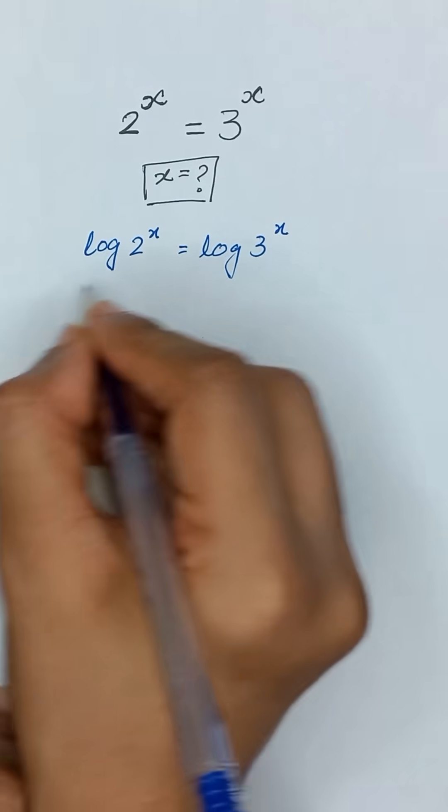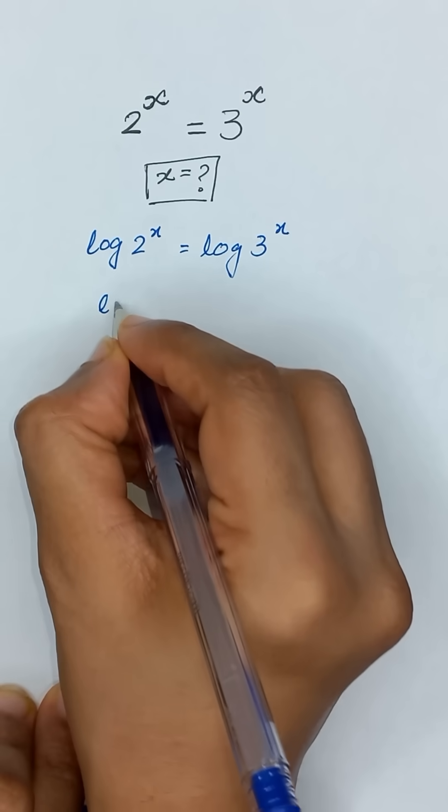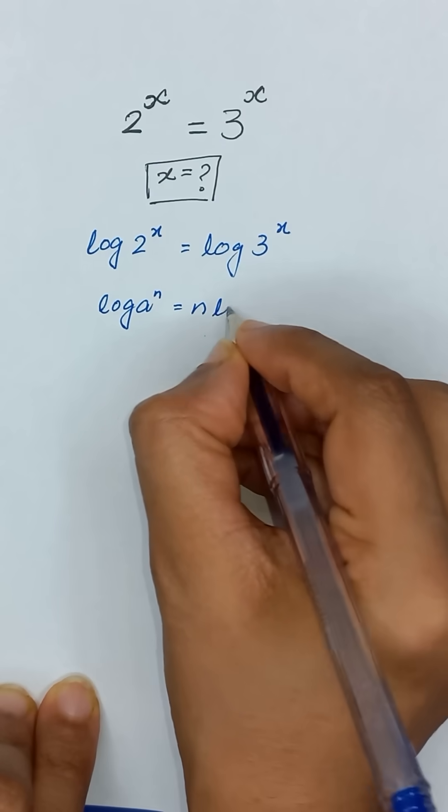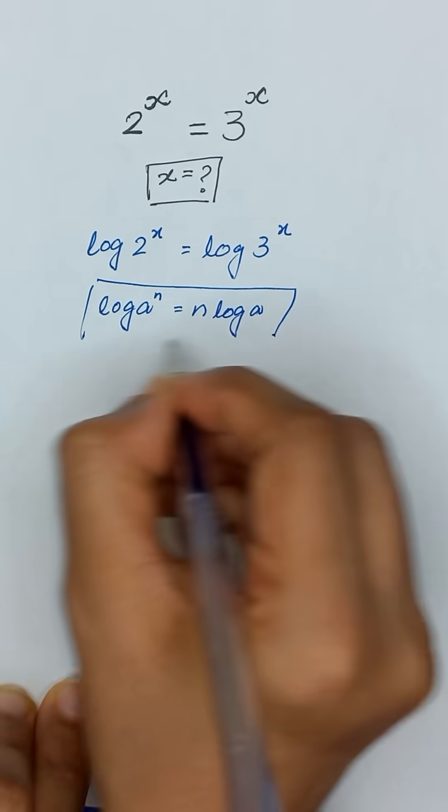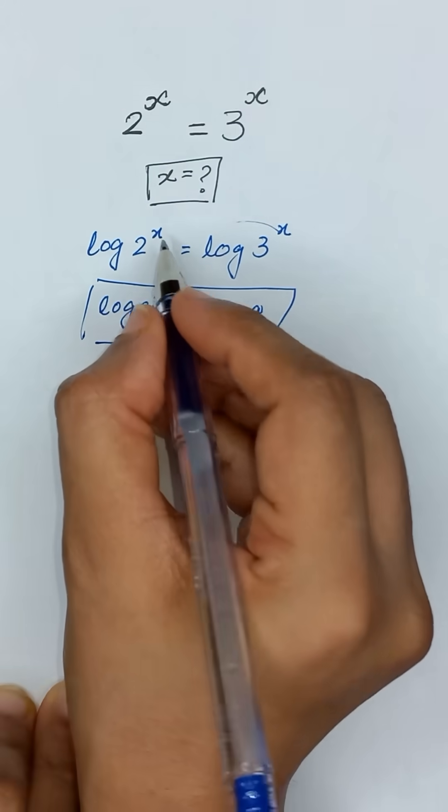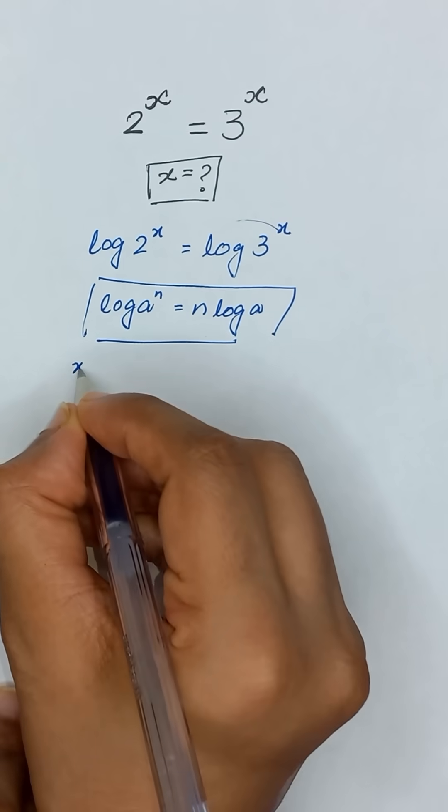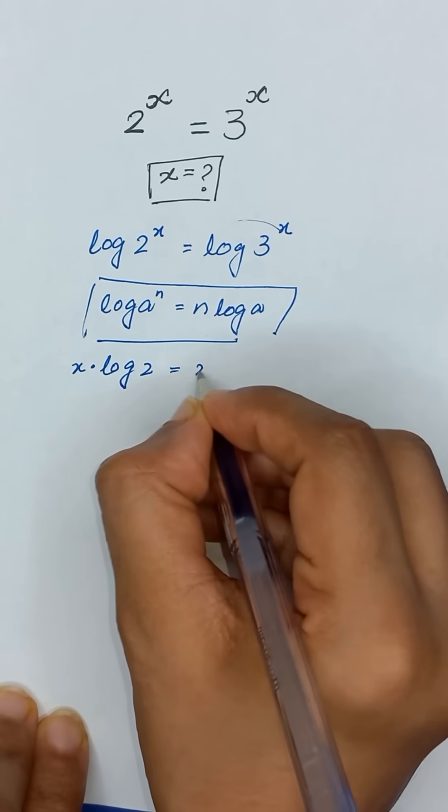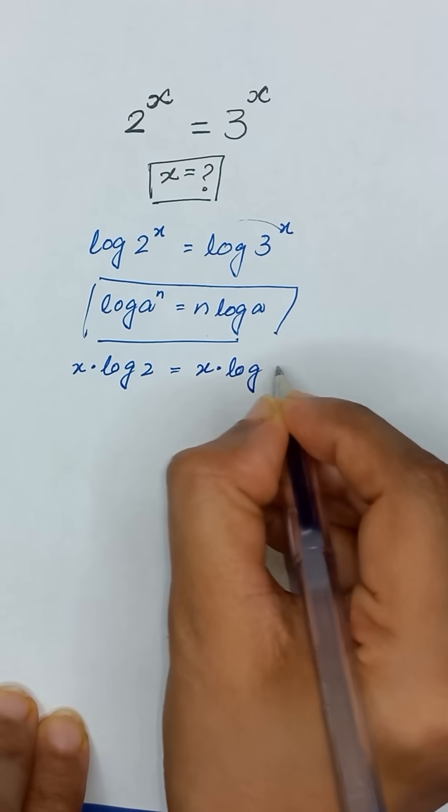As we know that this logarithm rule which is log of a to the power n is equal to n times log of a. So we will apply this rule on above equation. So it will become x times log of 2 is equal to x times log of 3.